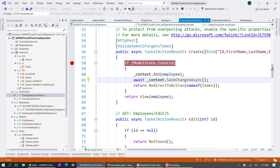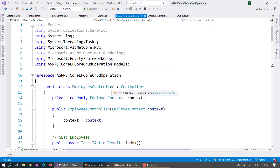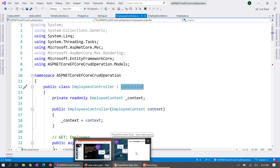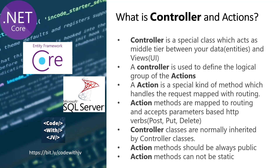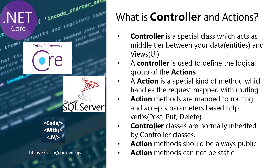Here you can see our Employee Controller, and in this video I want to emphasize on controllers and actions — explaining how they work and what is special about them. Basically, a controller is a special class that acts as a middle tier between your data (your entities) and the user. A controller is used to define a logical group of actions. An action is a special kind of method that handles requests mapped with routing.